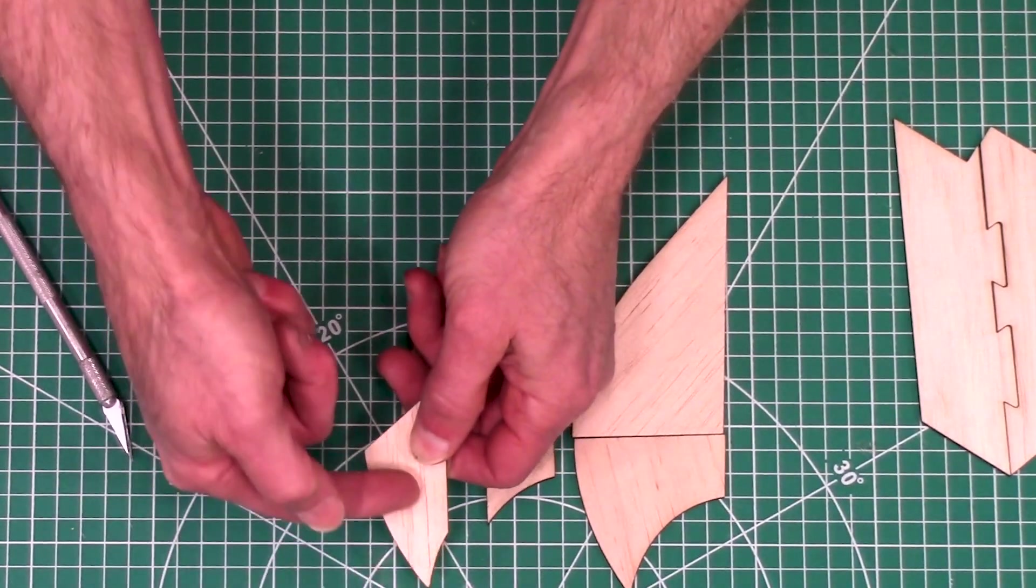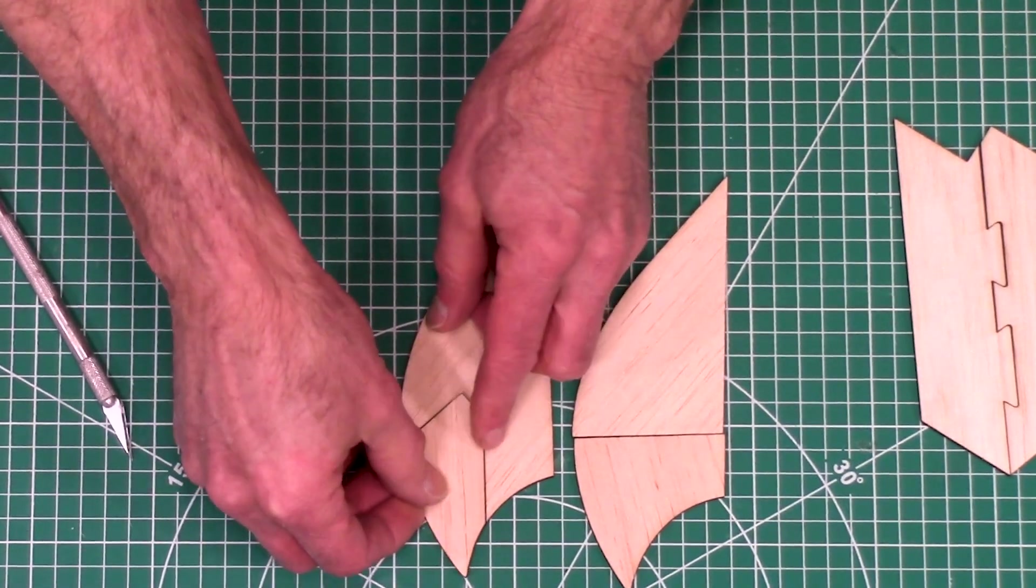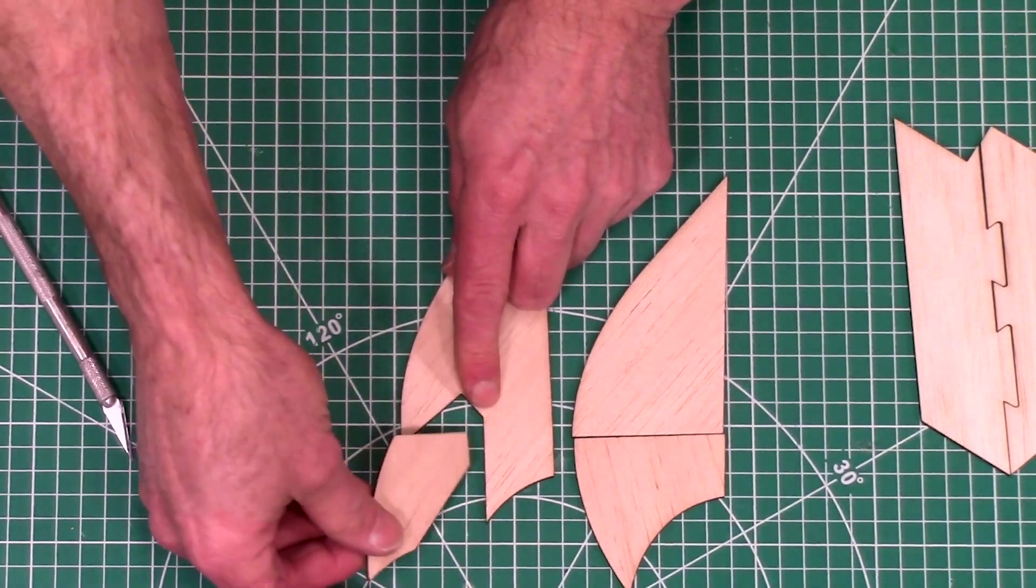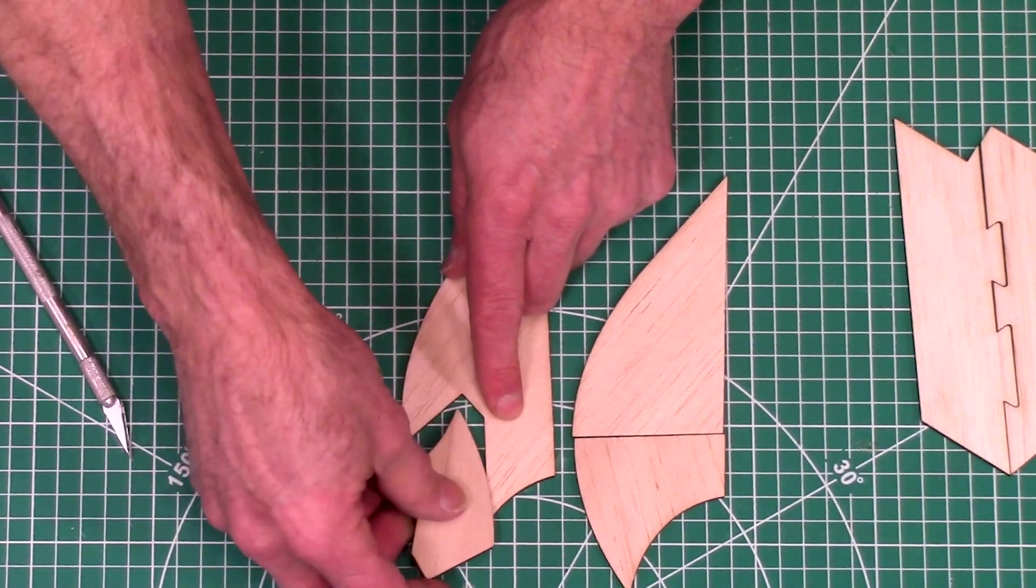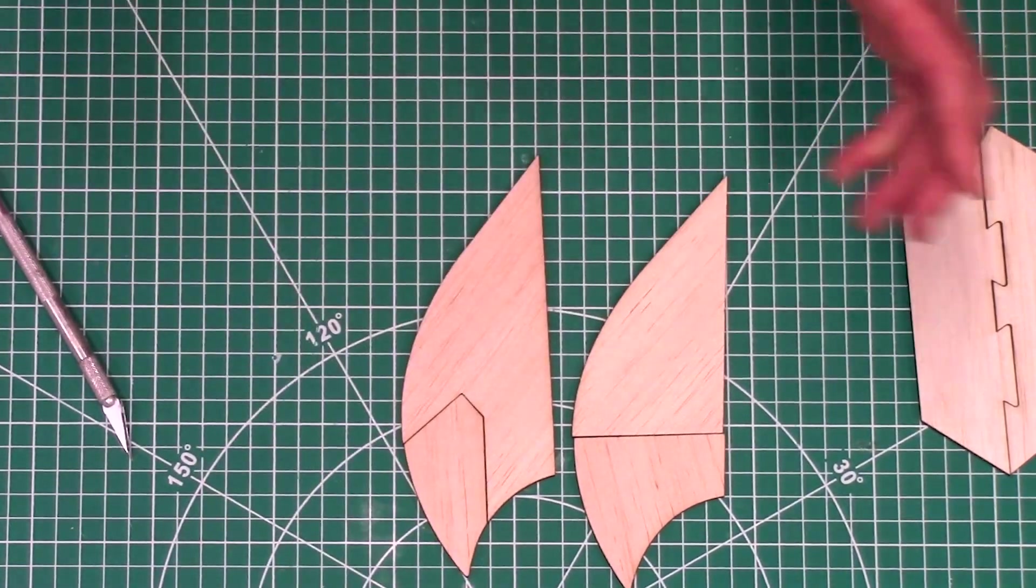We want the grain on the tip to be going vertically. So this is the way we try to design it like that so that you can't glue it together any other way. And it's not going to fit like that.